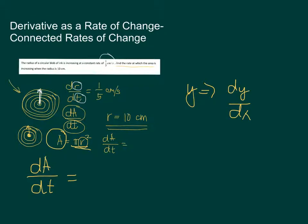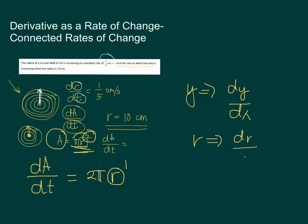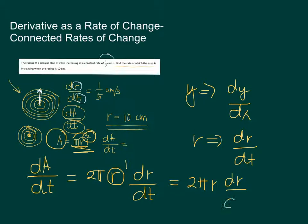To differentiate π r², we use the basic differentiation rule, noting that r must be differentiated with respect to time. The exponent 2 is brought down and multiplied to π, giving 2π. The r² becomes r¹. Then, applying the chain rule, we still have to differentiate r with respect to time, giving dr/dt. So in simplest terms, dA/dt = 2π r · dr/dt.